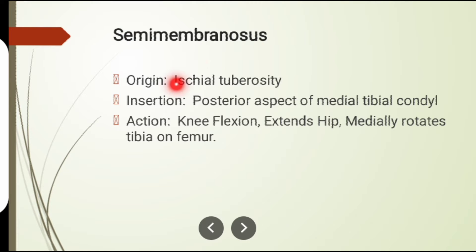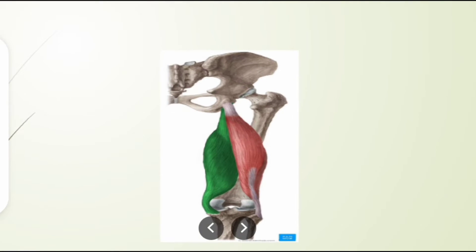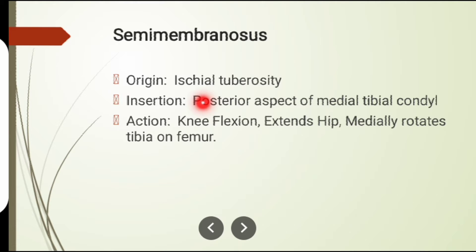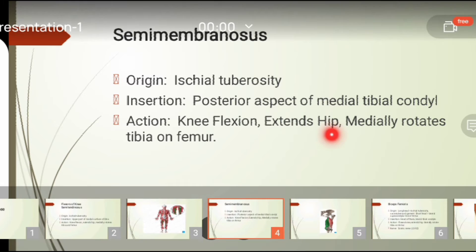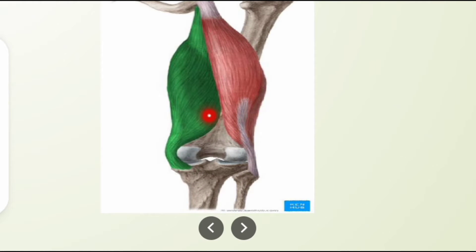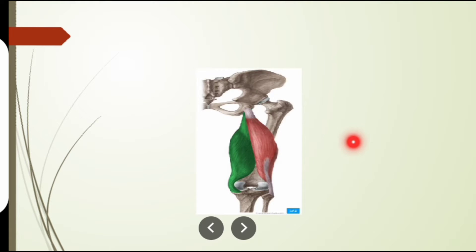The second flexor of the knee is semimembranosus. Its origin is also from the ischial tuberosity. Its insertion is on the posterior aspect of the medial tibial condyle. The action is knee flexion, hip extension, and medial rotation of the tibia.